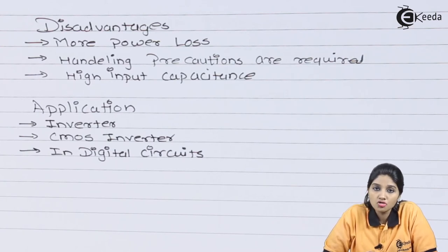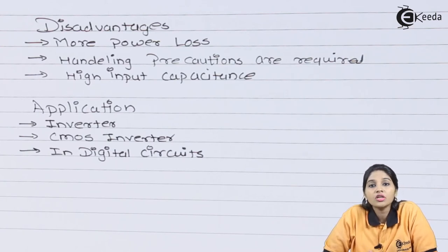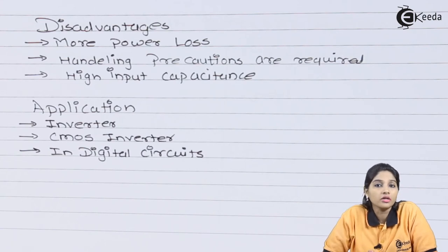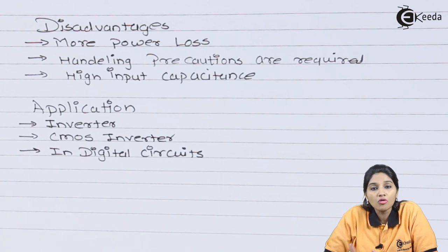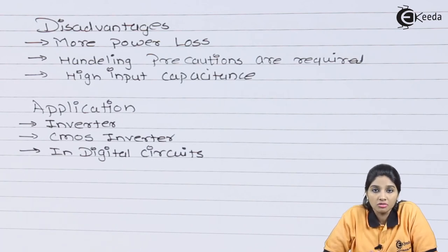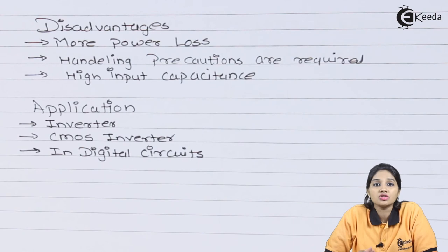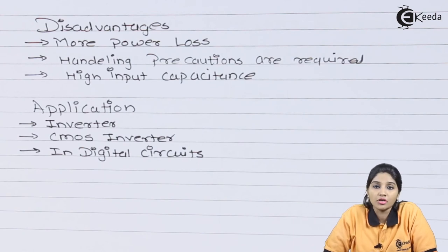Moving towards the applications of E-MOSFET: it can be used as an inverter and is used mostly in linear applications. It can be used in CMOS inverters as well as in digital circuits, whereas D-MOSFET is used as an amplifier and in linear applications.